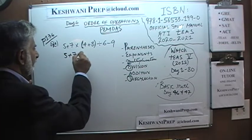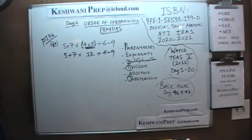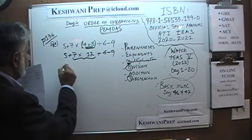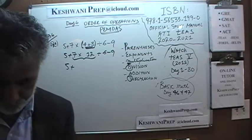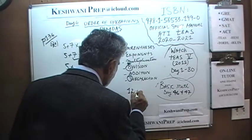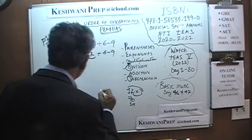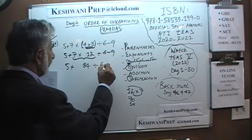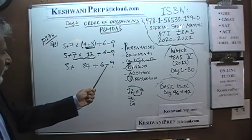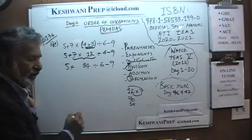So 4 plus 8 in parentheses gives 12, and we rewrite: 5 plus 7 times 12, divided by 6 minus 9. Then comes the multiplication: 7 times 12. Ten times 7 would be 70 and 2 times 7 would be 14, so that's 84. Now we have: 5 plus 84 divided by 6 minus 9. We have addition, division, and subtraction — we do division next before addition and subtraction. So we have to divide 84 by 6.